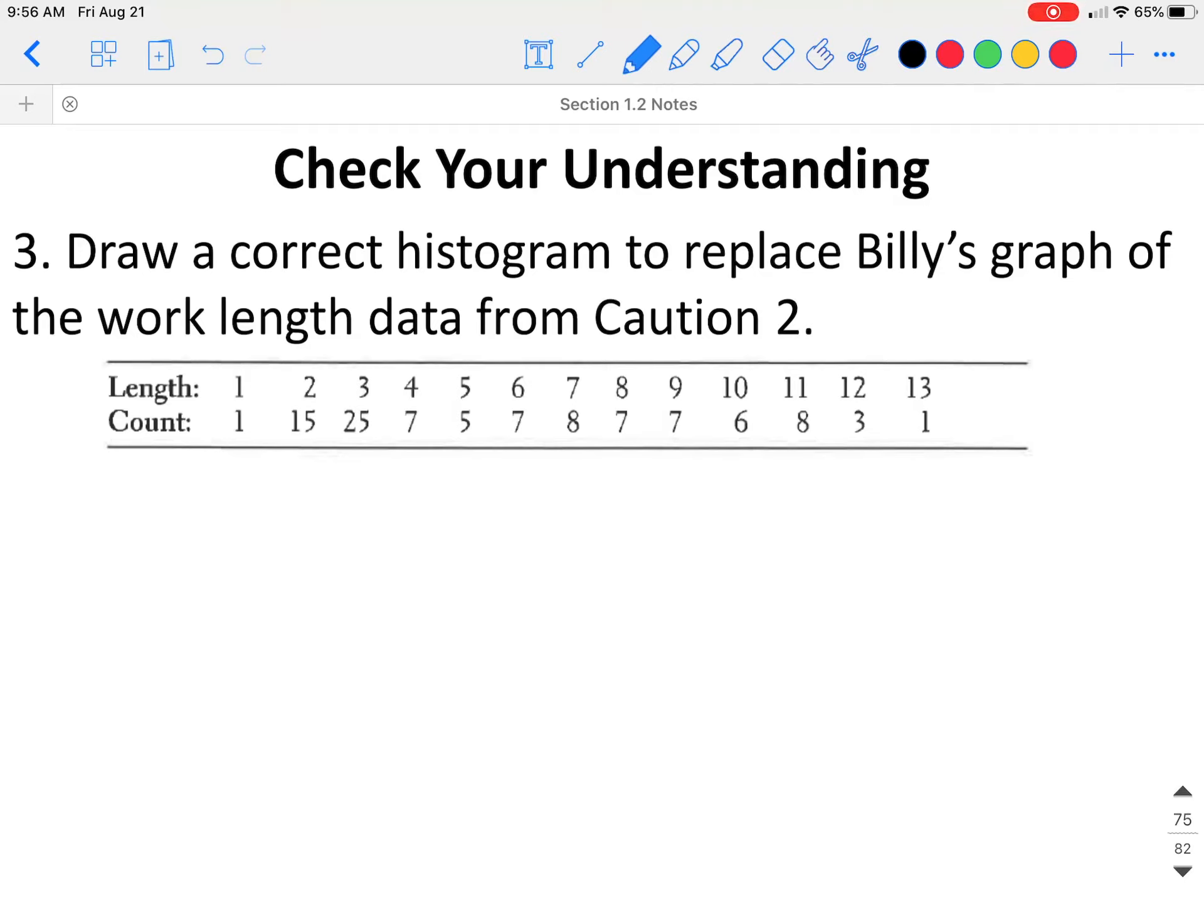We need to draw a correct histogram to replace Billy's graph of the length data from caution 2. As I described when we were talking about those, the better way to do this is to break it up into groups of 2. So from 1 up to 2, a length of 1 up to 2, there are a total of 16 of those words. Words that have a length from 3 to 4 in total have 32. We can go on from there. Or you can break it down into individual words.